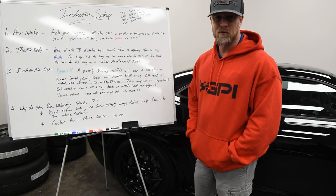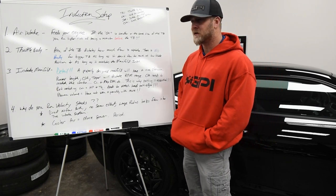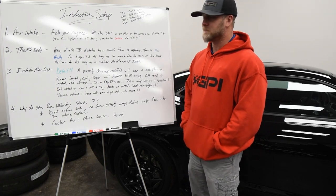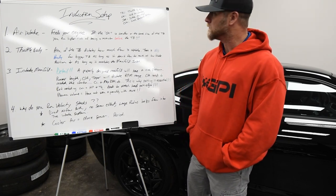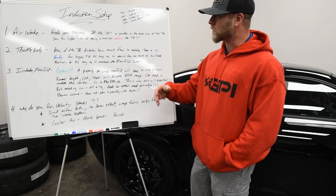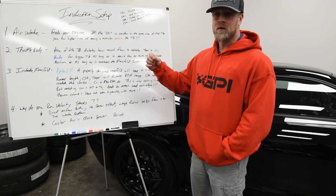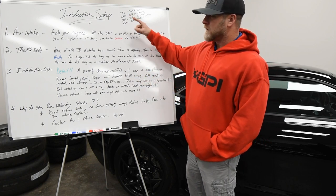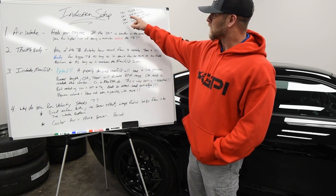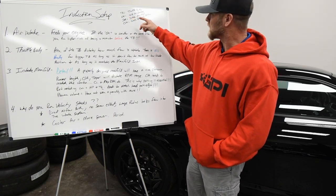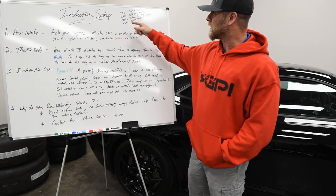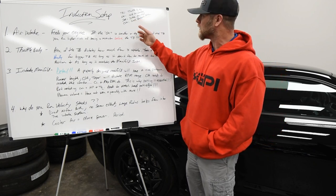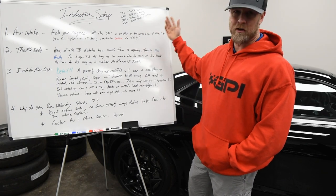Hey guys, it's Ryan at GPI. We're going to roll into our next segment of our GPI knowledge series. Today we're going to talk about some basics of induction setup, or at least from our perspective, things we look for when setting up your induction system for your particular combination. A few abbreviations you'll see: TB for throttle body, CAI for cold air intake, IM for intake manifold, and CSA for cross-sectional area.